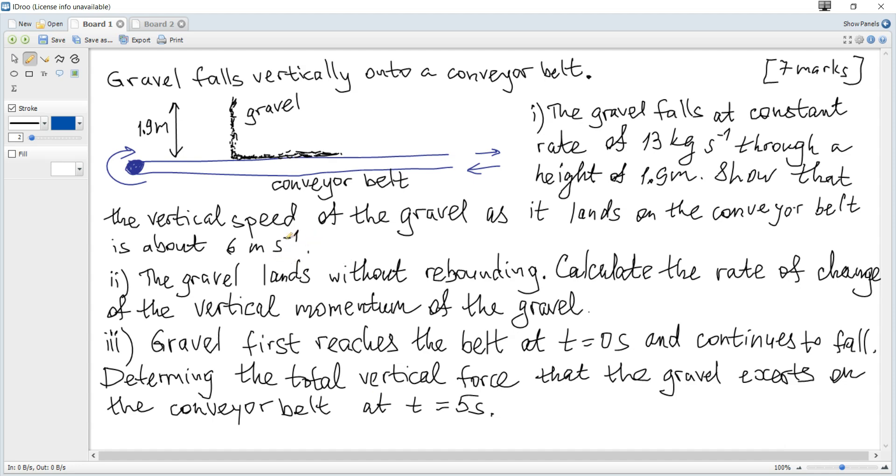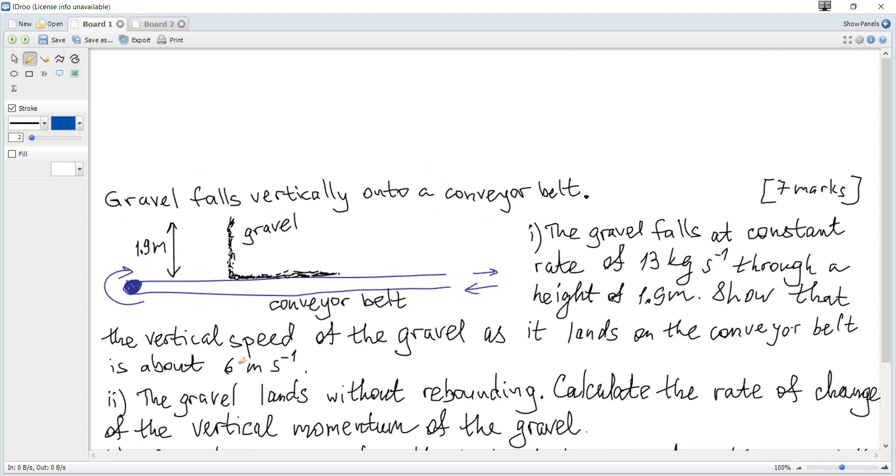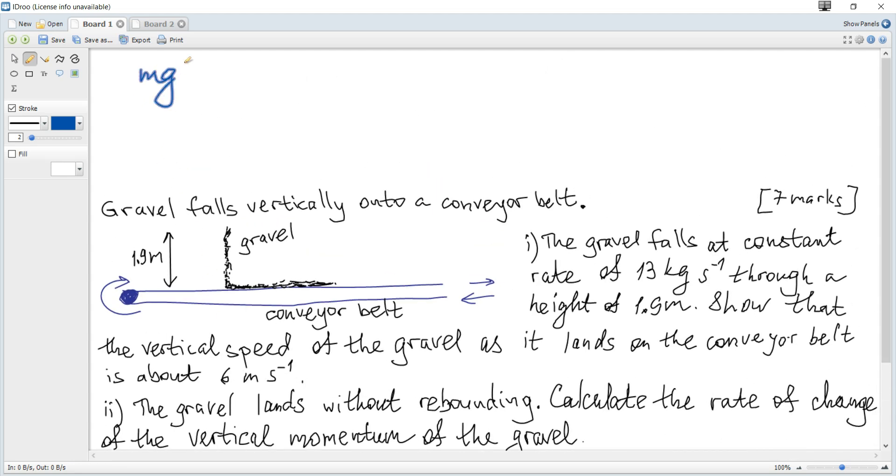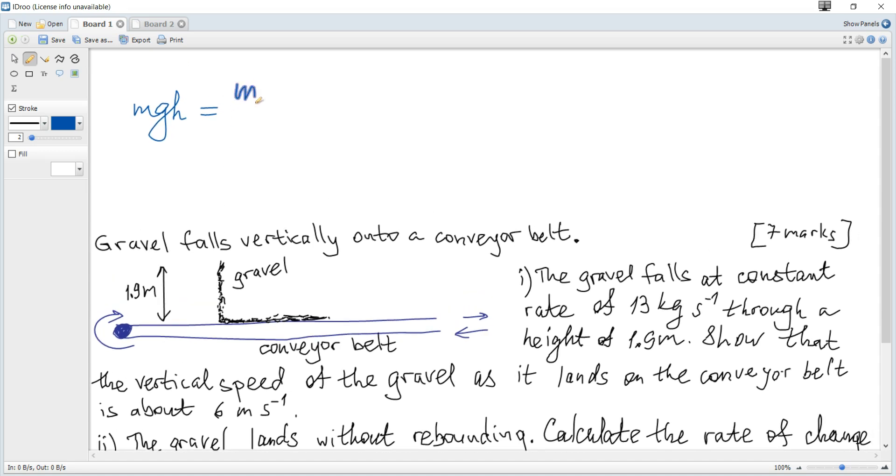Since there is a change in height, we can just apply conservation of energy. At this point, there is only gravitational potential energy which becomes kinetic at this point. So, we can write that mgh becomes mv squared over 2. Mass cancels. Hence, v is the root of 2gh.